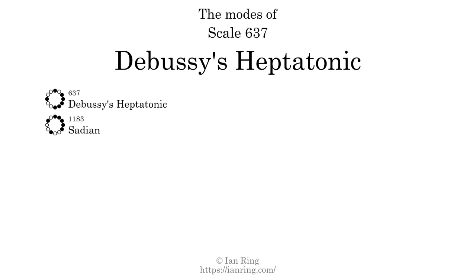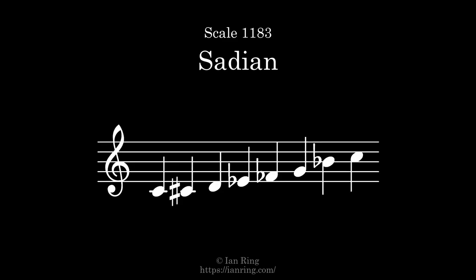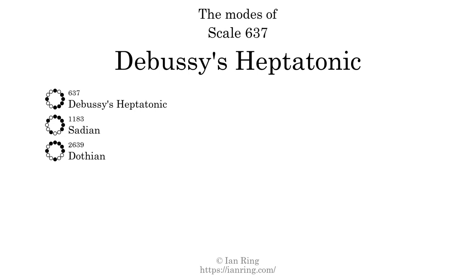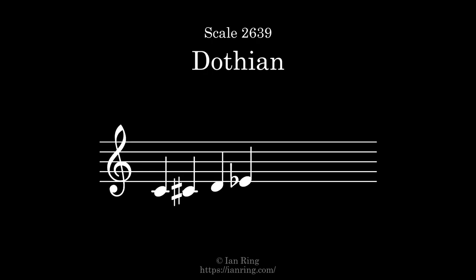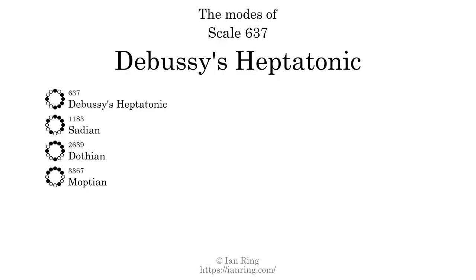The second mode is scale 1183, also known as Sadian. The third mode is scale 2639, also known as Dothian. The fourth mode is scale 3367, also known as Moption. Each sounds like this when demonstrated.